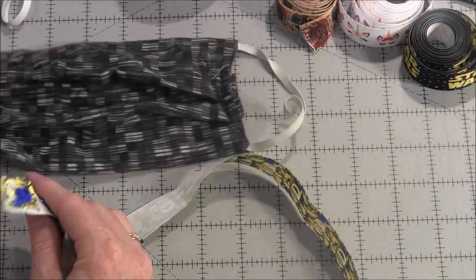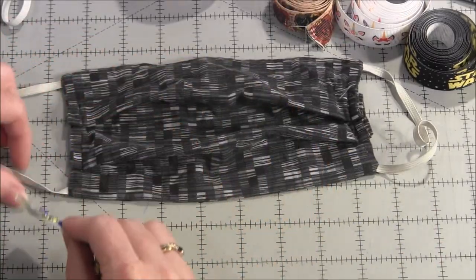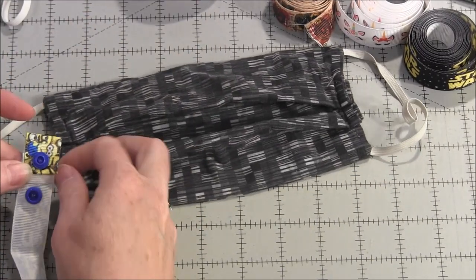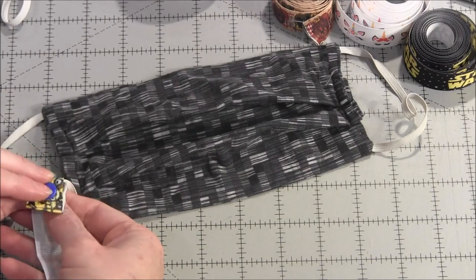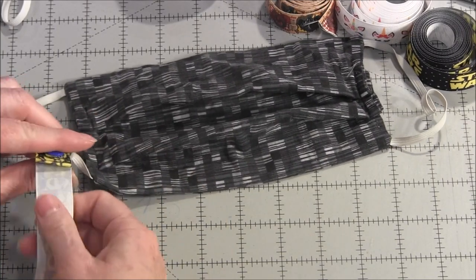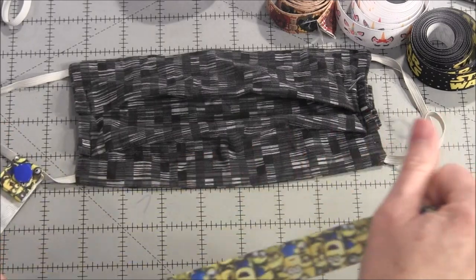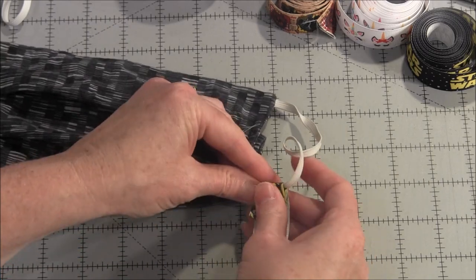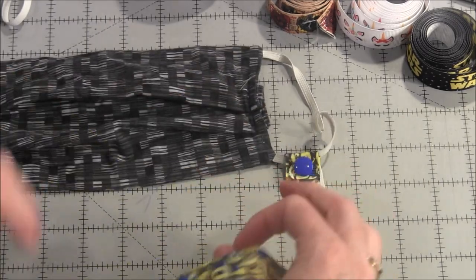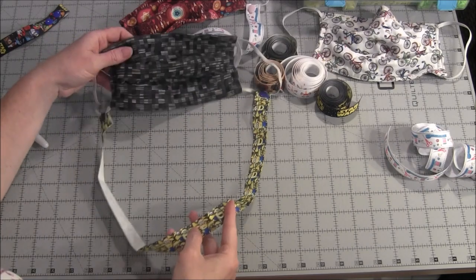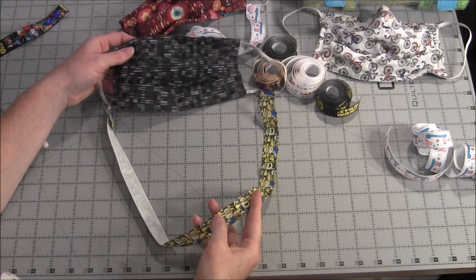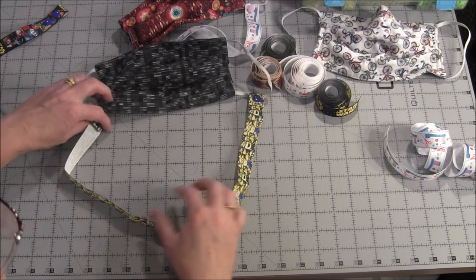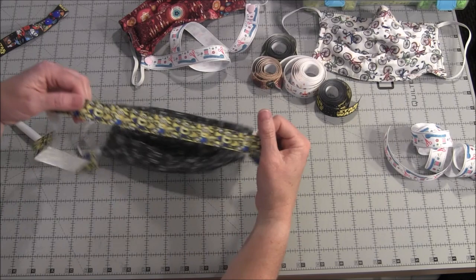To install your new lanyard onto your mask, just put the elastic of the mask in between and snap it, then make sure it doesn't twist when you put it on the other side. And then this can hang around your neck and you have a finished mask lanyard made with some fun ribbons that can match your child or your personality.